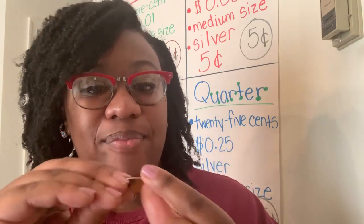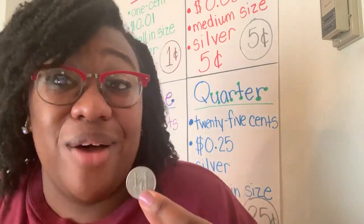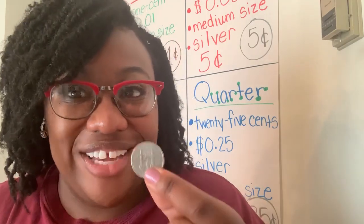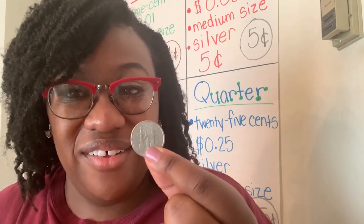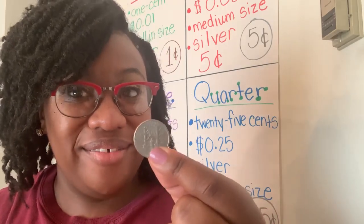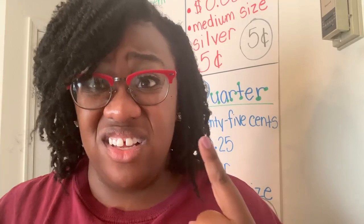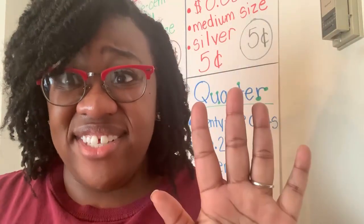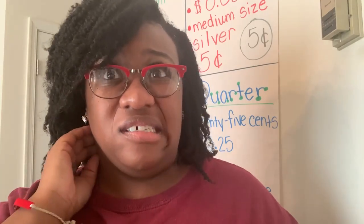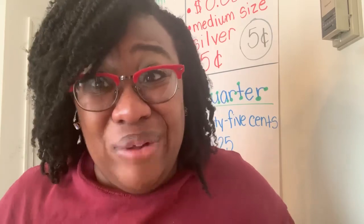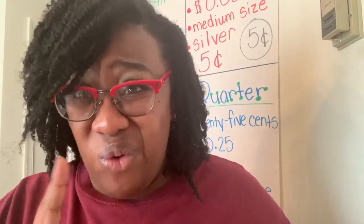Then we flip our quarter over. The cool thing about the quarter is there are different pictures on each one. Some quarters have national parks, some quarters have buildings, some quarters even have cool pictures. This one has a national park. So penny is worth one cent, nickel is worth five cents, dime is worth ten cents — so how much is a quarter worth?